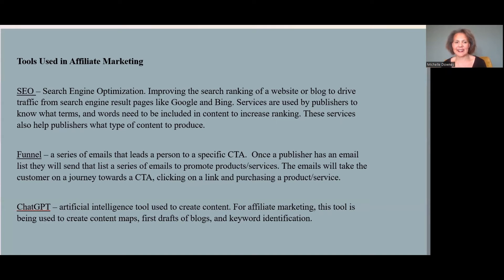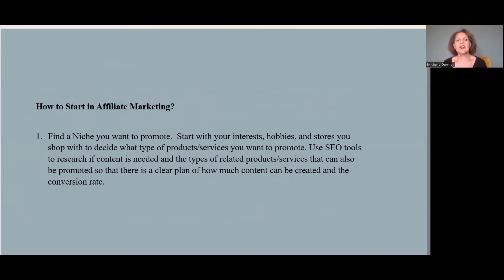ChatGPT is becoming more and more a part of our lives. It is a tool for you to use, not rely on. In affiliate marketing, ChatGPT can create a content map, help with SEO, and write your articles. However, if you use ChatGPT to write articles or scripts, make sure you also use a program that checks for grammar, spelling, and plagiarism. ChatGPT will help you work faster, but you cannot totally rely on it.